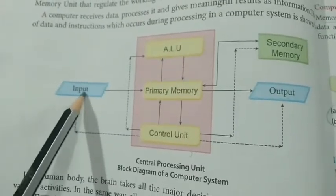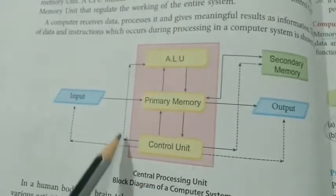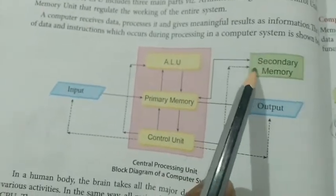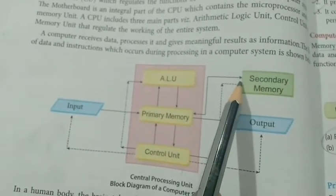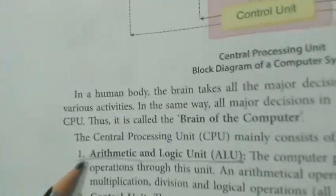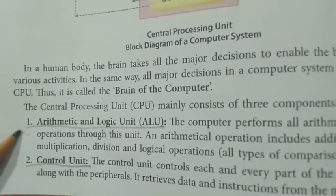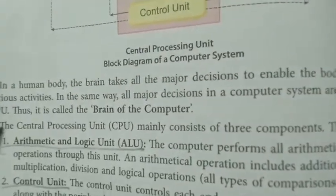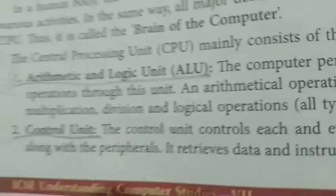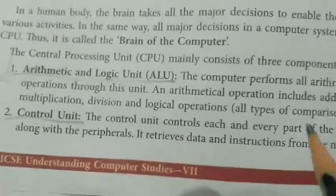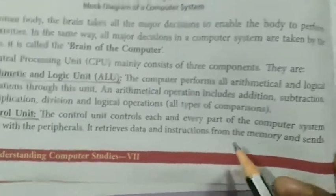Inside a CPU there are three parts: ALU (Arithmetic Logic Unit), primary memory, and control unit, along with input devices, output devices, and secondary memory. The user gives inputs via mouse or keyboard. The output will be stored in secondary memory. The ALU performs arithmetic operations like addition and subtraction, as well as logical operations. The control unit takes care of peripheral devices attached to the computer and retrieves data and instructions from memory, sending commands to various parts of the computer system.